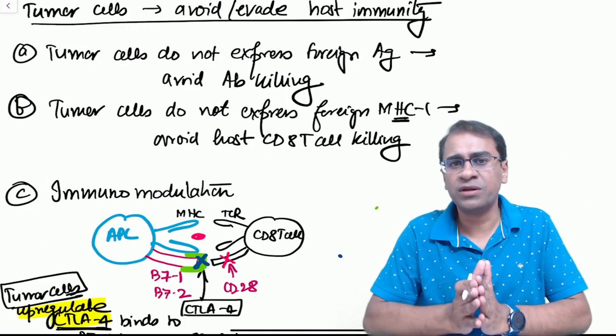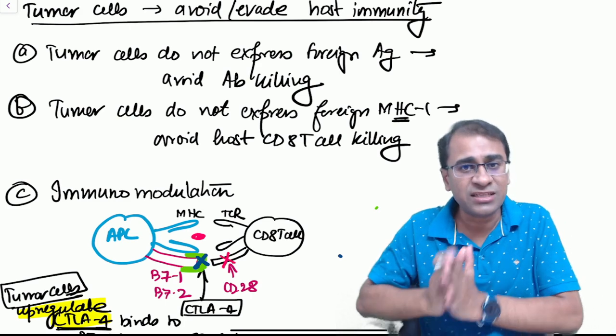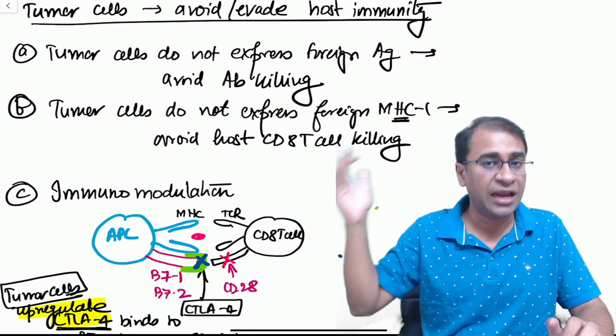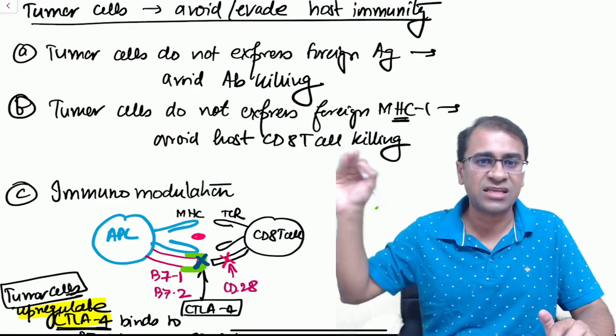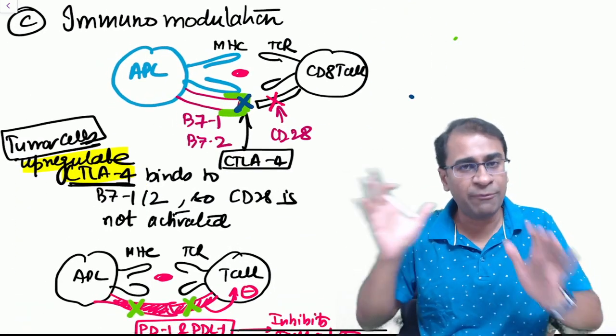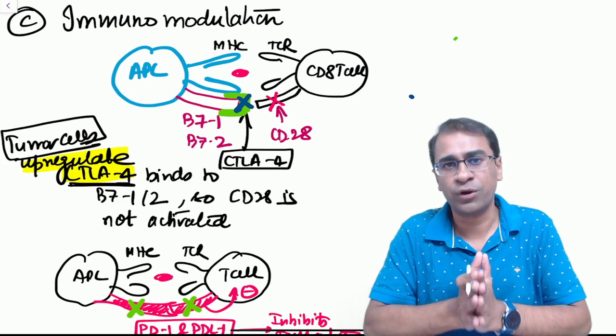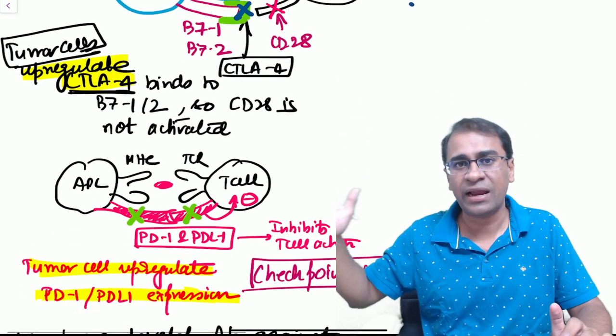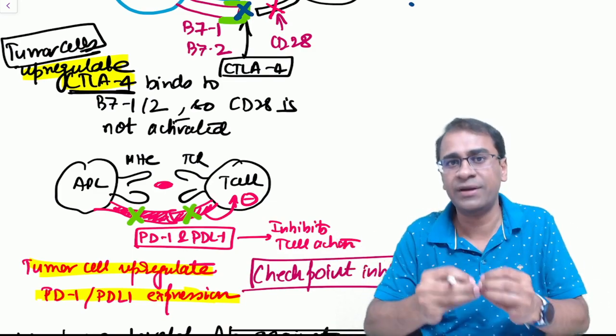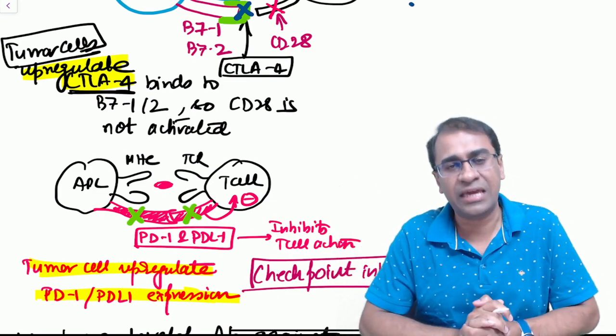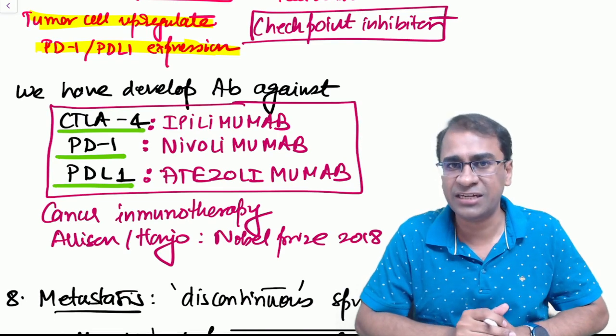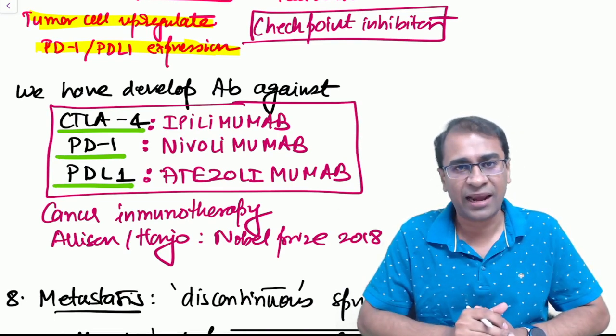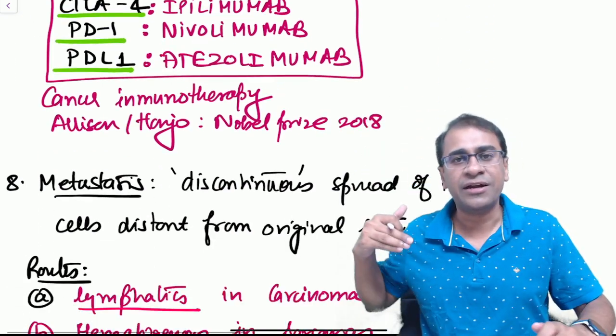How does the tumor cell evade the immune system? It does so by having inhibition of or negative expression of MHC1, and that is very important. One more thing is immunomodulation. I have made a different video out of this, please watch about it. It talks about CTLA4 inhibitor, it talks about PD1 and PDL1 which will also inhibit the T-cell action against the APC. These are the drugs which are active against CTLA4, PD1, and PDL1. The same question was asked recently in an exam.